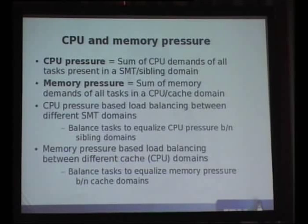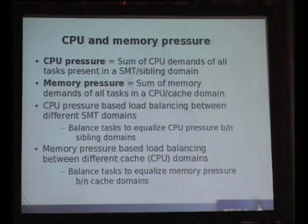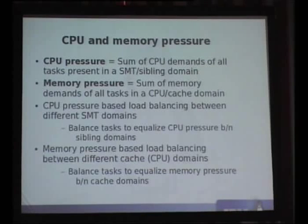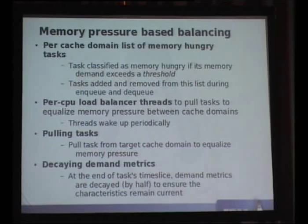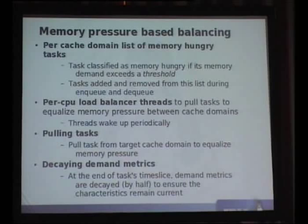The final change we introduced into the scheduler was pretty simple. We had all the data available — we had characterized all the tasks as either memory-hungry or cache-hungry, and we had per-domain metrics like CPU pressure and memory pressure. All we had to do was equalize these metrics between domains. If there were four cache domains, the scheduler would try to maintain equal memory pressure across all domains, and similarly equal CPU pressure across all sibling domains. That was the core change — a very simple one. We are trying to equalize the memory pressure and the CPU pressure between the domains.